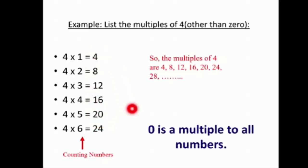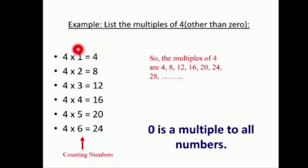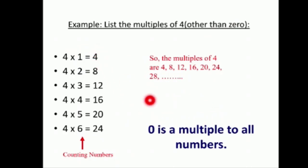لاحظنا أنه الزيرو هو multiple of any number. هلأ أنا هون لأنه ما بلشت عن الزيرو، بس الزيرو هو موجود وهو multiple of any number.